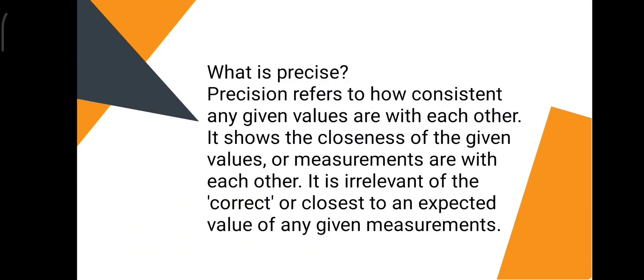Precision refers to how consistent any given values are with each other. It shows the closeness of the given values or measurements are with each other. It is irrelevant of the correct or closest to unexpected value or any given measurements. So basically consistency is what we are looking for when you say precise. It is not the correct or closest to unexpected value but it is just consistency of any given number.